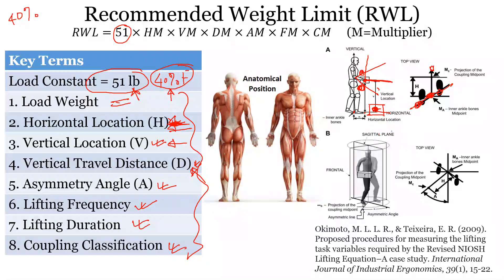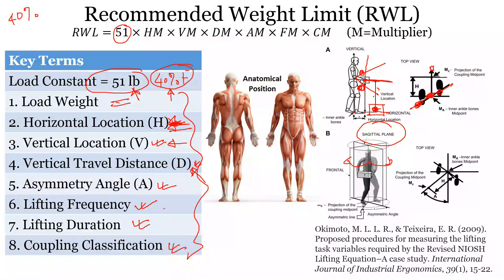Asymmetry angle is measured from the sagittal plane — how far you are moving to either side. Lifting frequency is averaged over 15 minutes: count the number of lifts and divide by 15 to get lifts per minute.